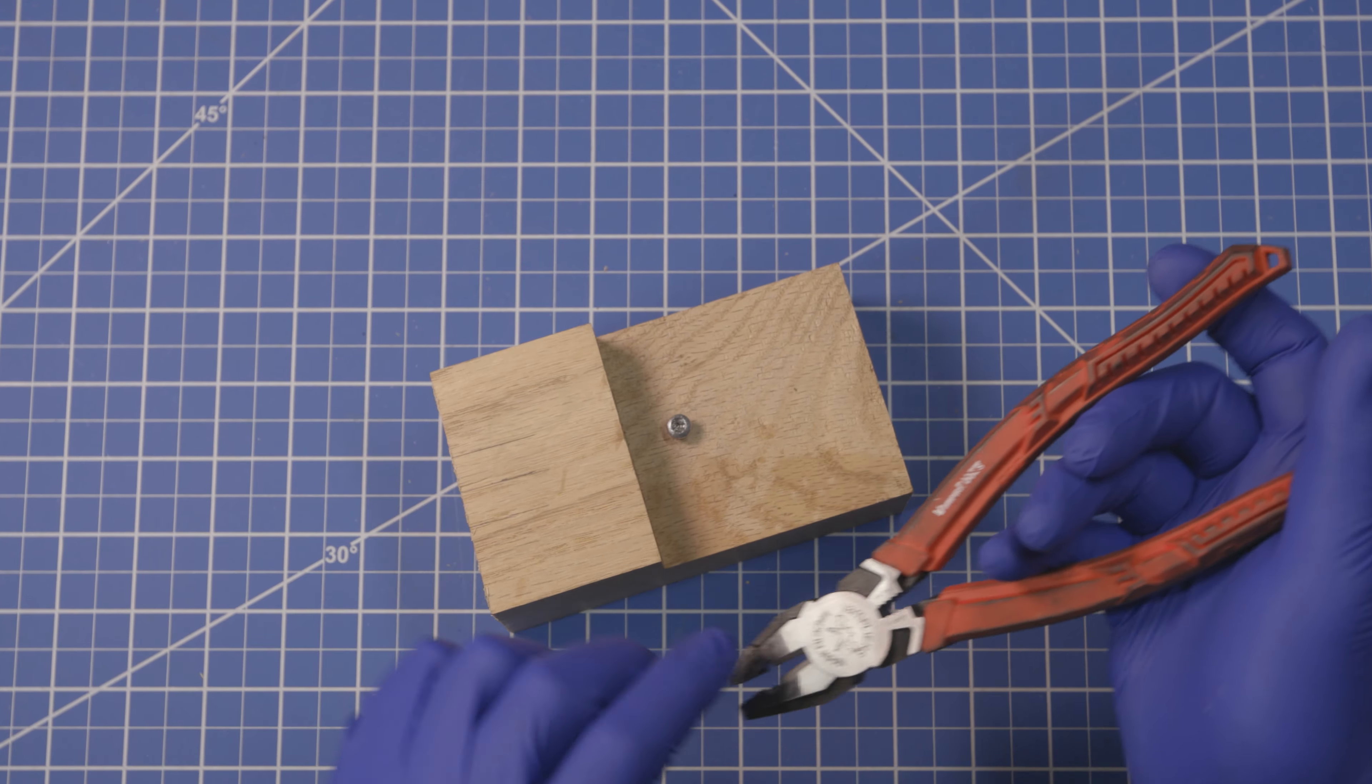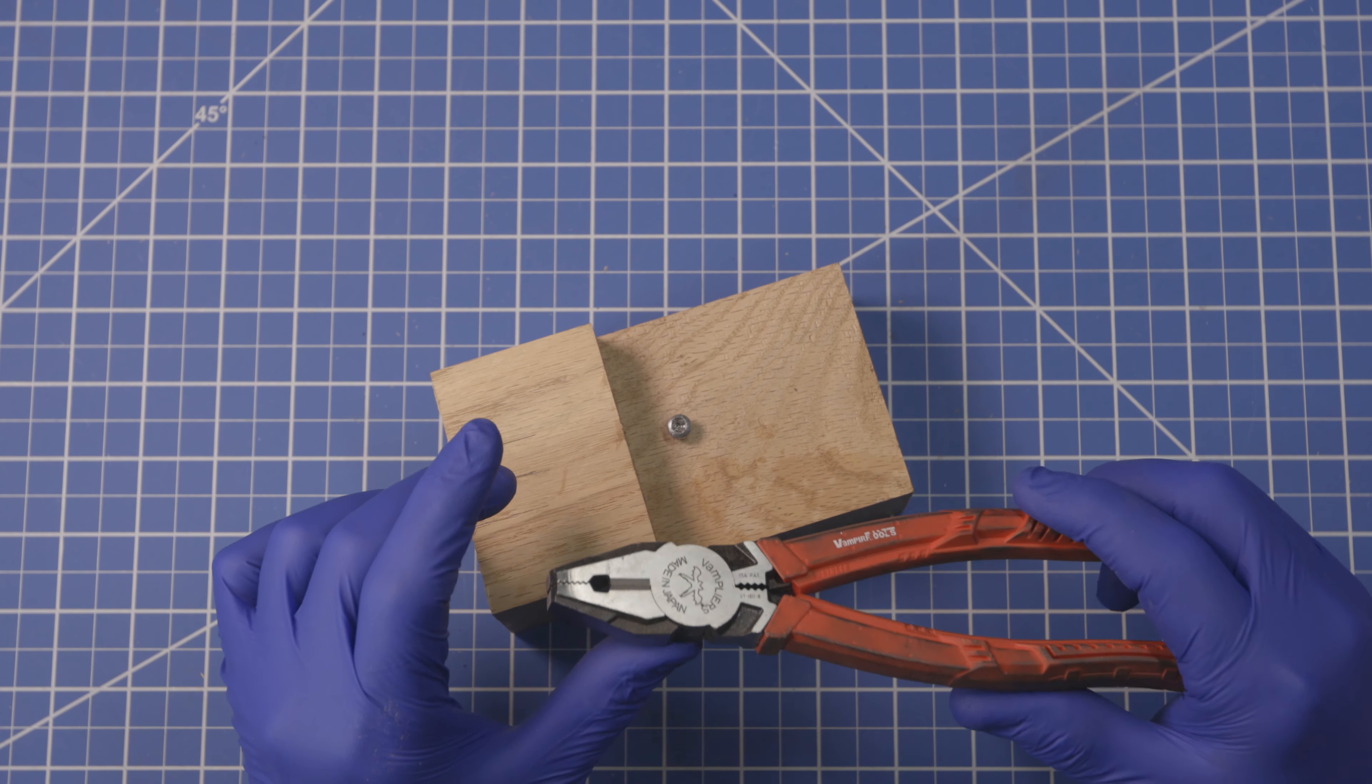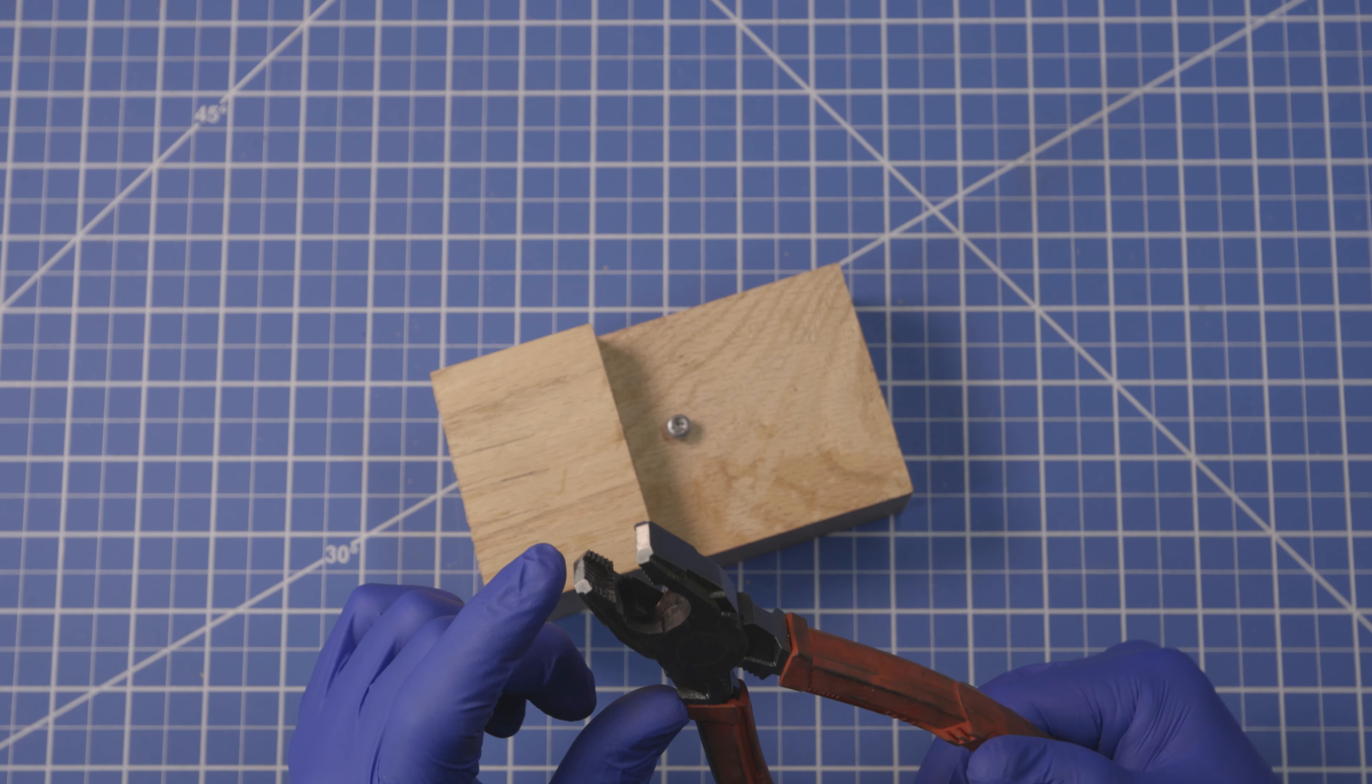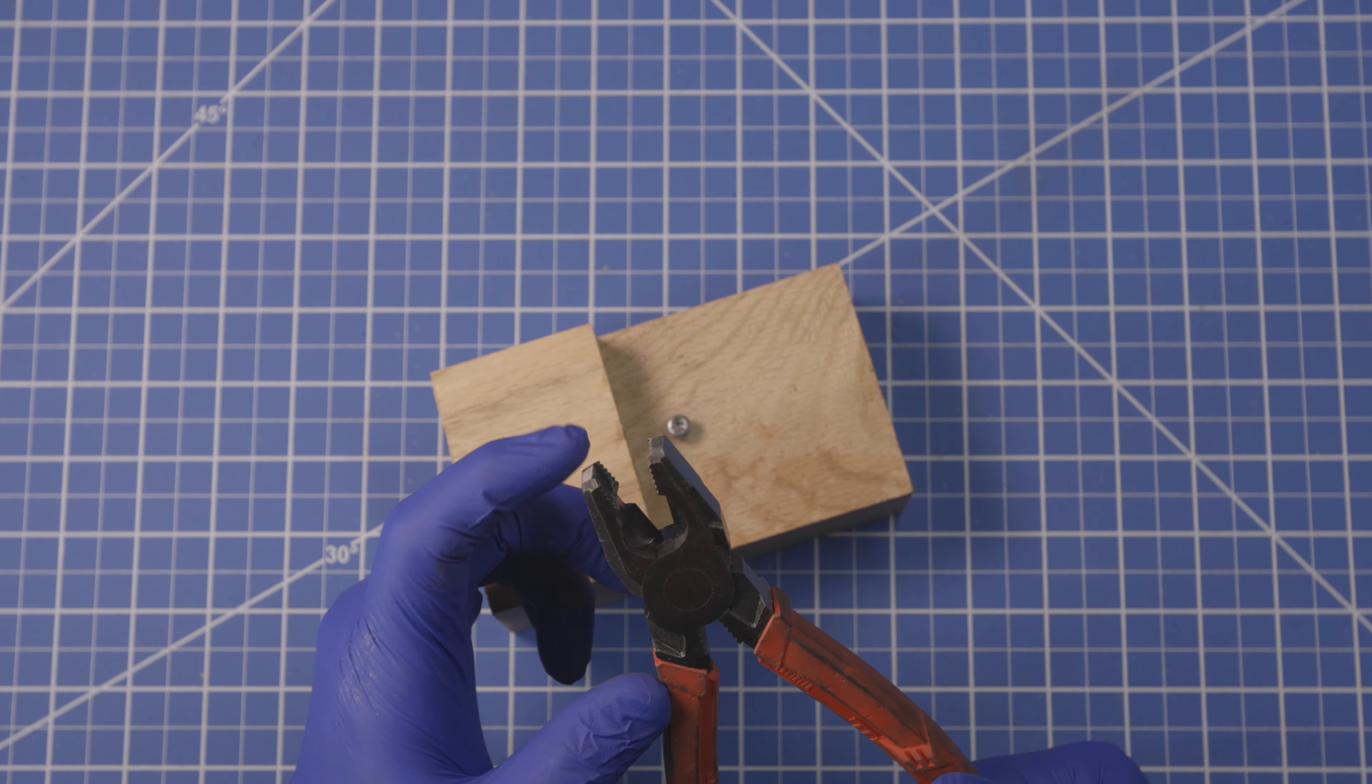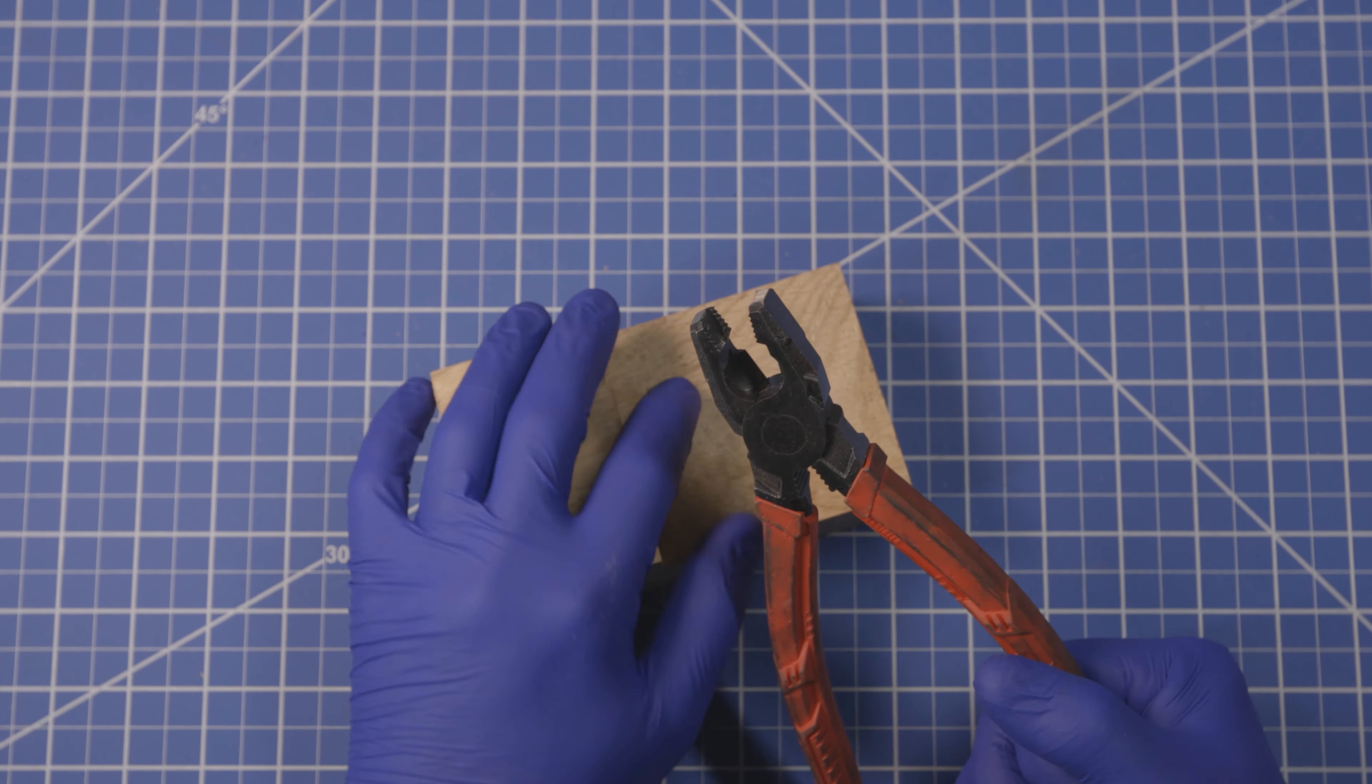Now, it's obviously not as fast as if the screw head wasn't damaged, but it works really well. These are nice and flat, so that you can get flush to the surface that you're trying to get the screw out of.